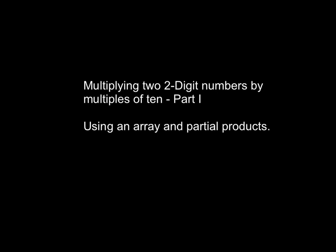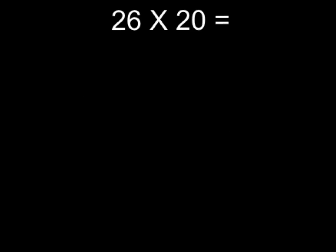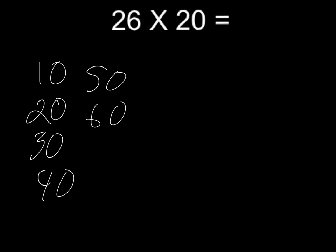One way you can multiply two two-digit numbers is if one of them is a multiple of 10 - that's the key word here, they've got to be a multiple of 10. So that means if one of your two-digit numbers is 10 or 20, 30, 40, 50, all the way up to 90.